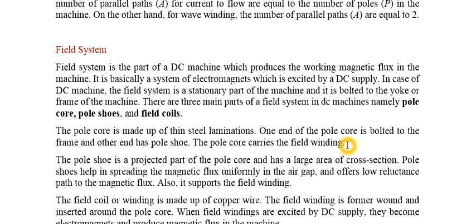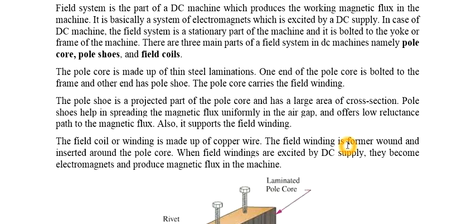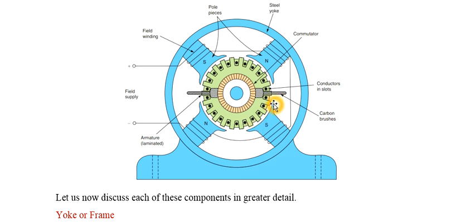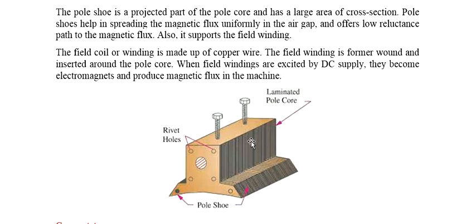Poles are used because they provide a stable, concentrated, unidirectional flux path. The field system contains pole core, pole shoes, and field coils. The pole core is made of thin steel laminations. The pole shoe is a projected part of the pole core with a larger cross-sectional area, which supports the field windings placed on the pole. You can see the laminated pole core and the pole shoe with its larger cross section in the figure.